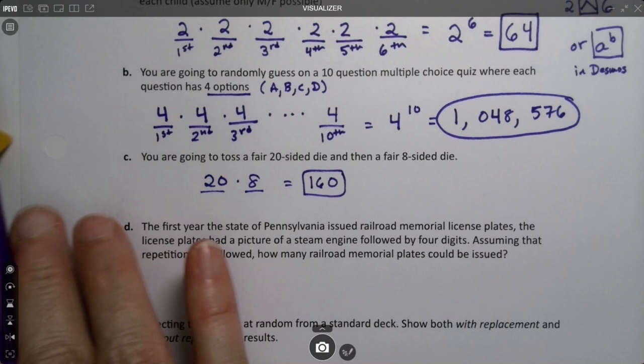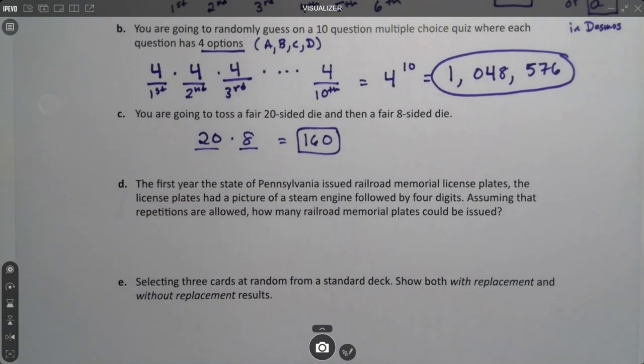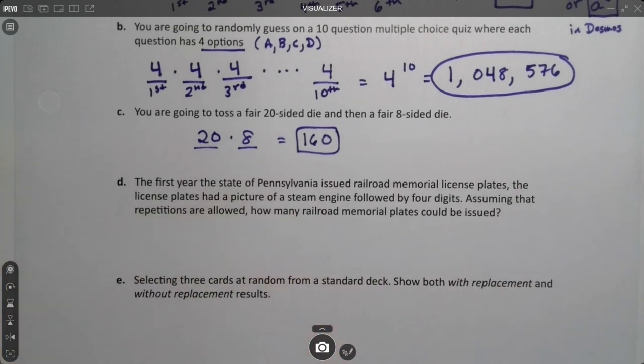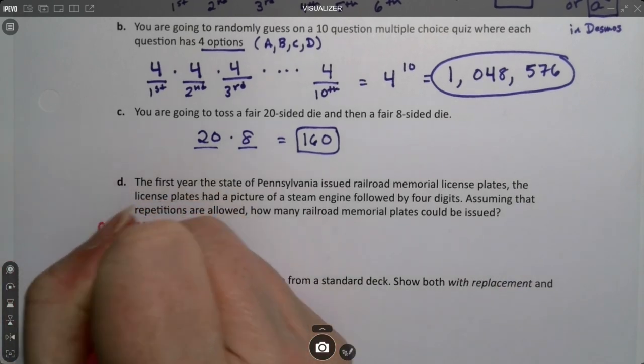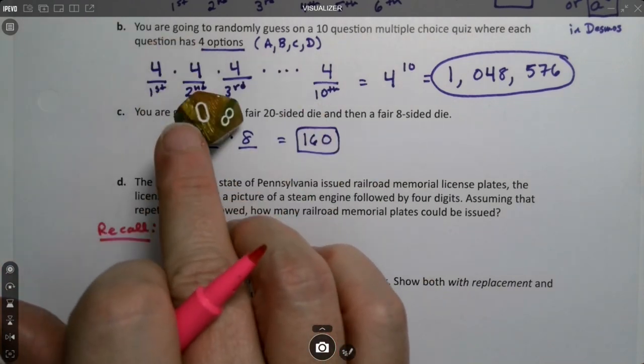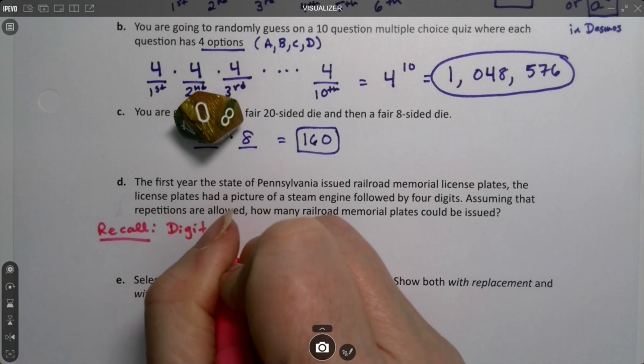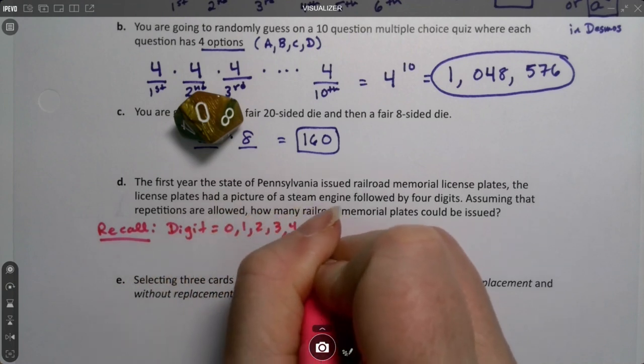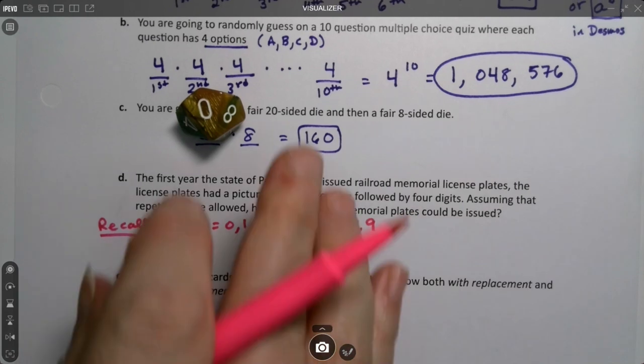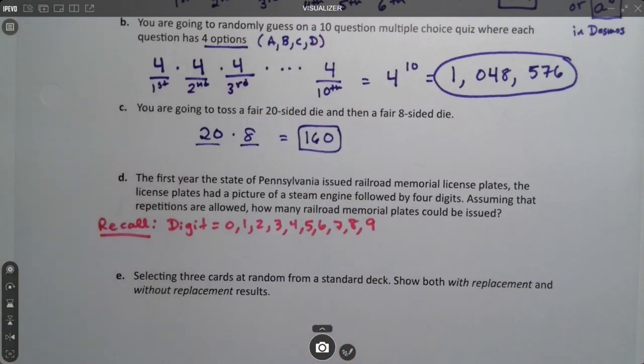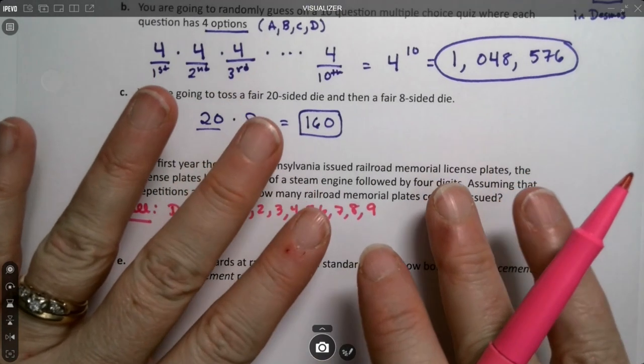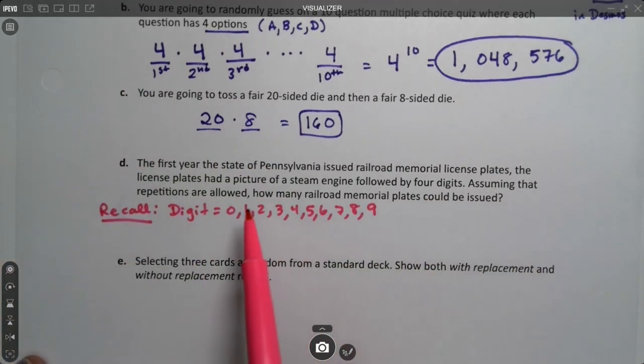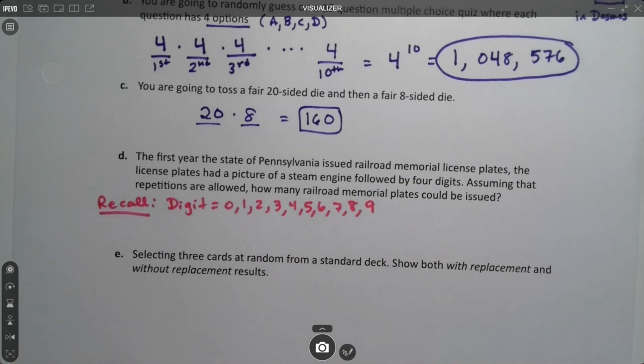The first year the state of Pennsylvania issued railroad memorial license plates, the license plates had a picture of a steam engine followed by four digits. Assuming that repetitions are allowed, how many railroad memorial plates could be issued? Let me remind you about what a digit is. A digit is one of these 10 numbers: 0, 1, 2, 3, 4, 5, 6, 7, 8, 9. Give me your digits means give me your telephone number. There's also the digits of your fingers, because there's 10 of them. So that's what a digit is.